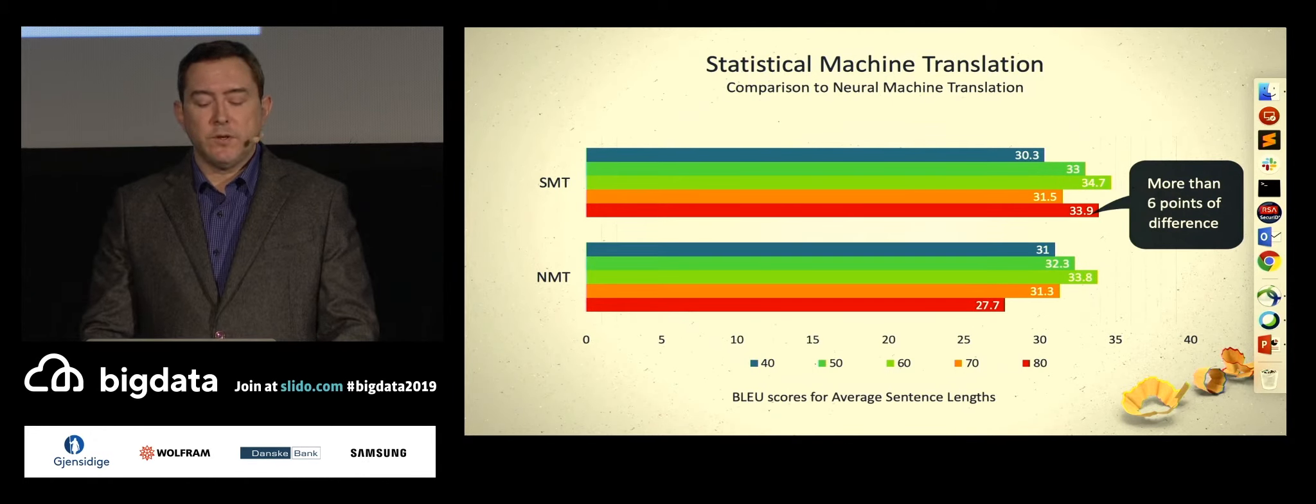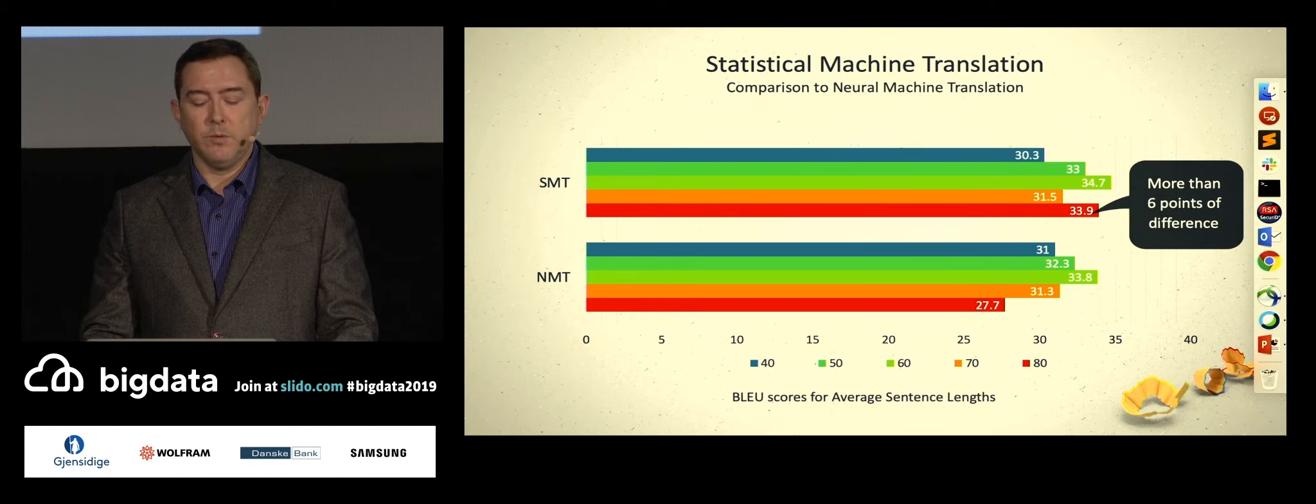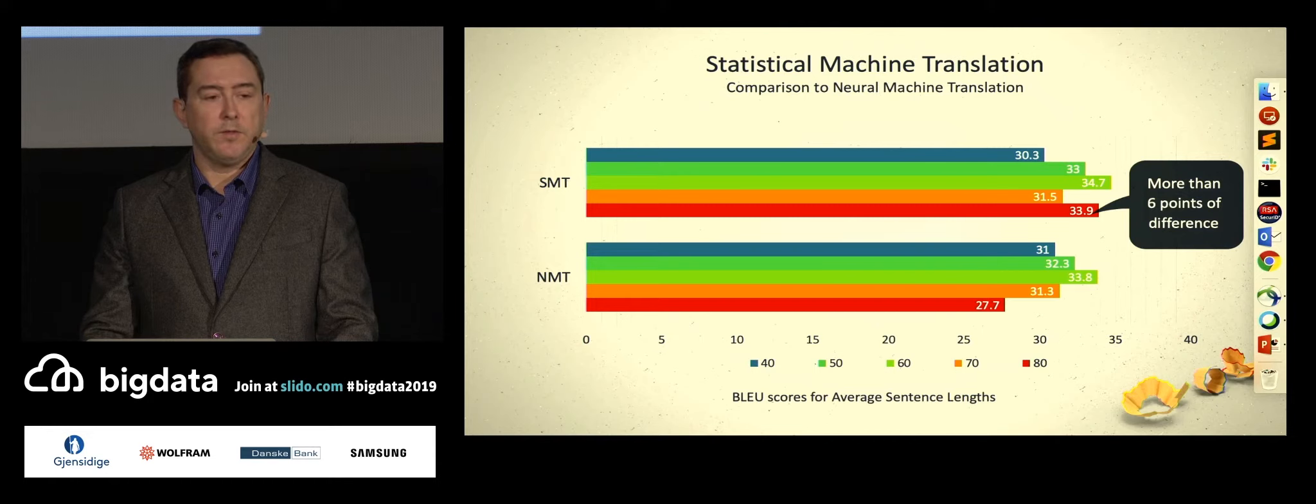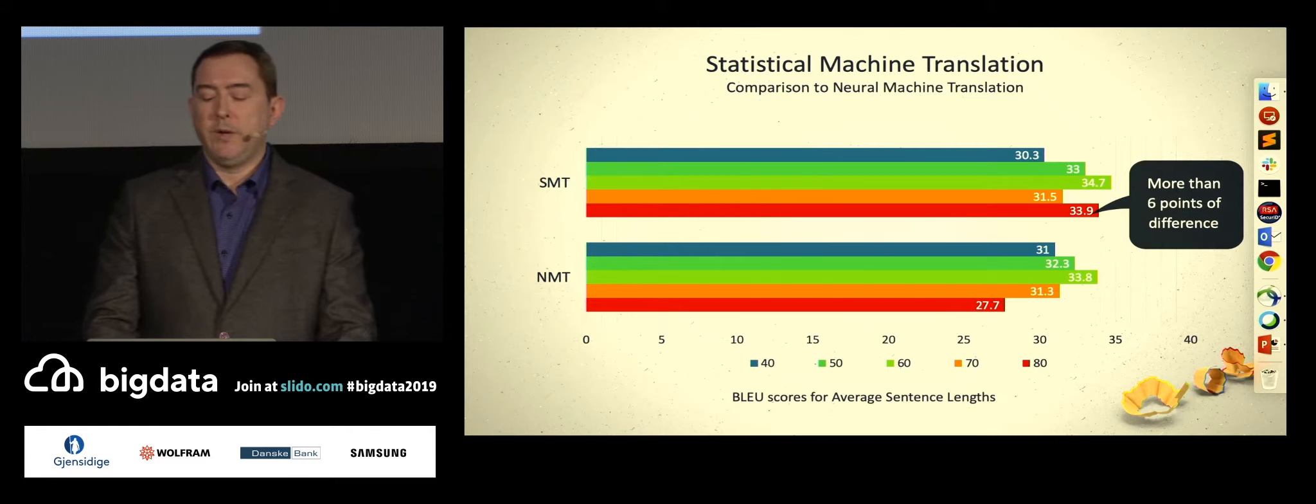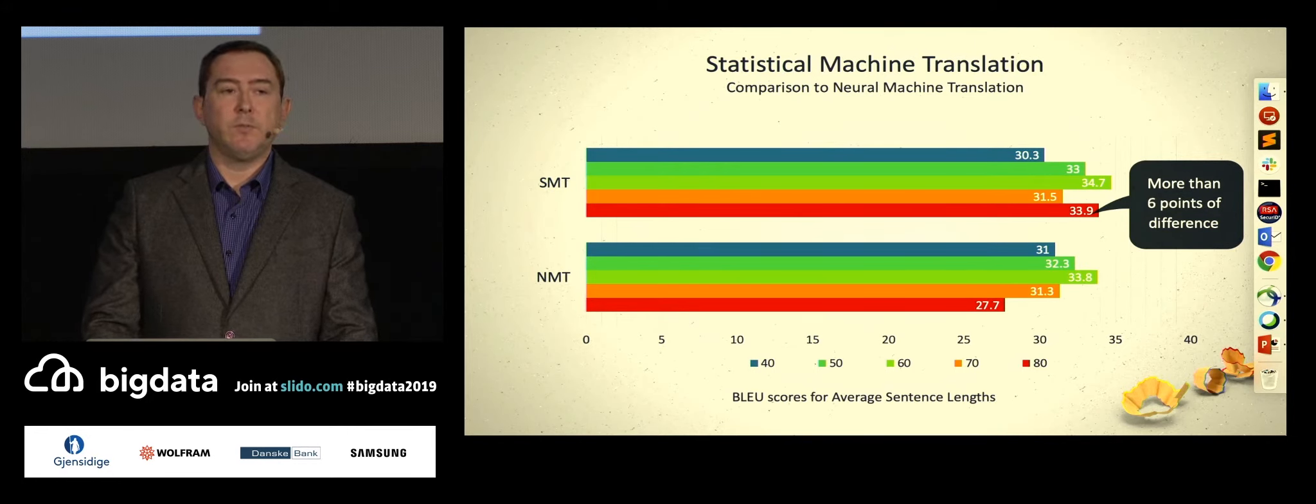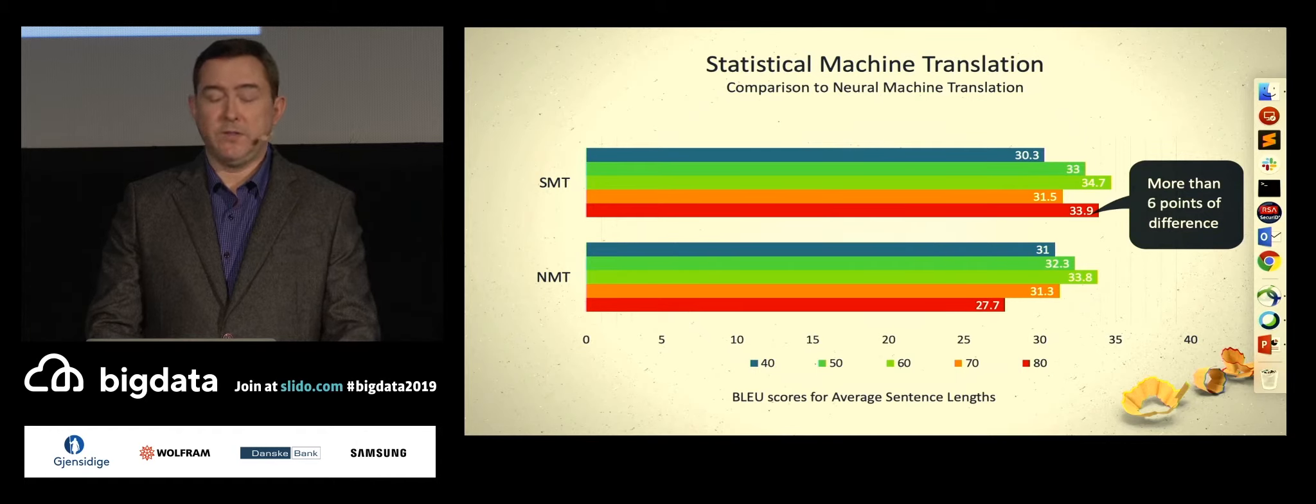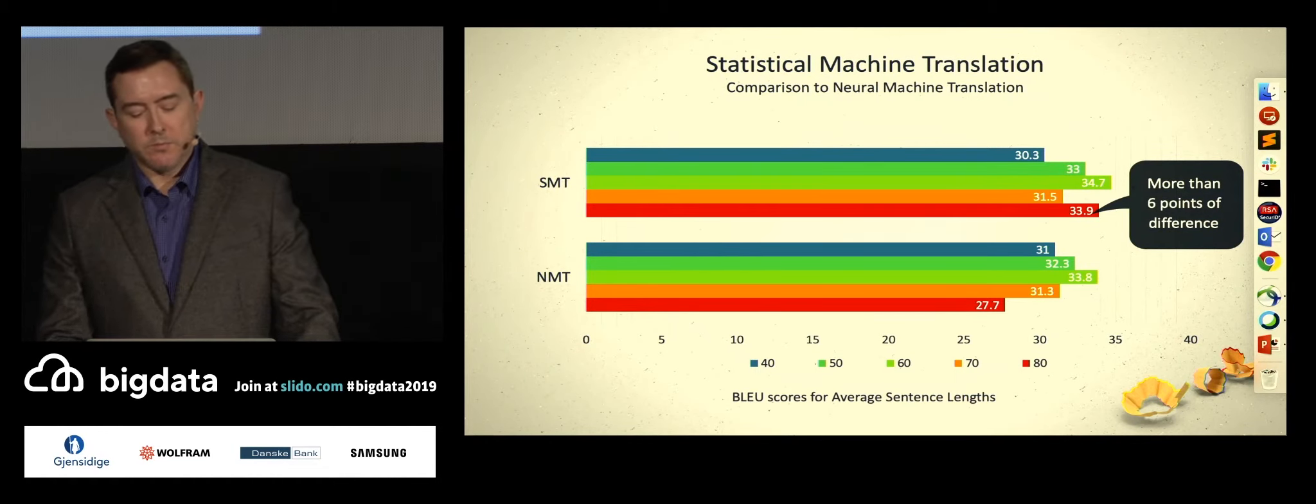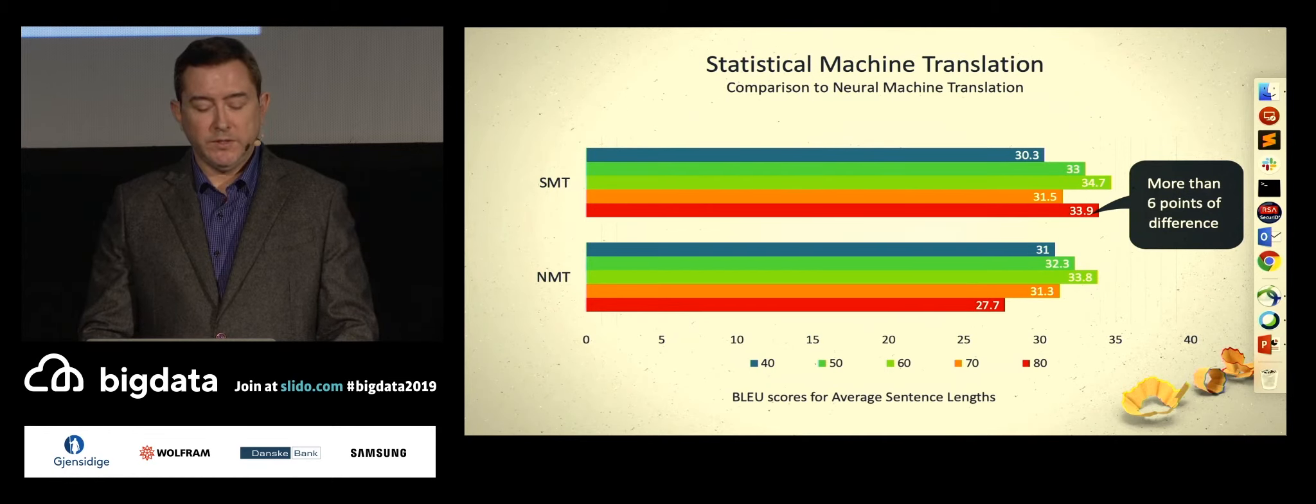Notice in the results from the graph that the statistical system scores better than the neural system on sentences of length 70 or more. The results presented here are based on translating sentences from English to Spanish. They also assume a huge amount of data. You could consider it big data, since we're at the conference and we all love this stuff. The scores here are all reported using the common scoring metric again, BLEU, for machine translation.